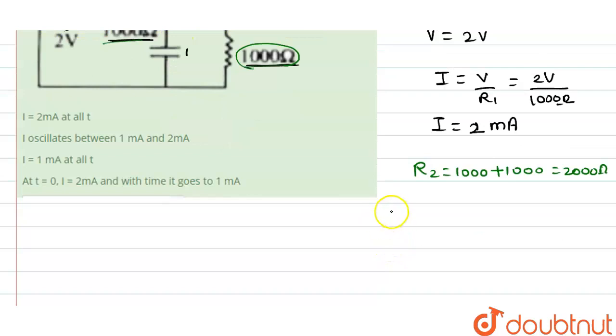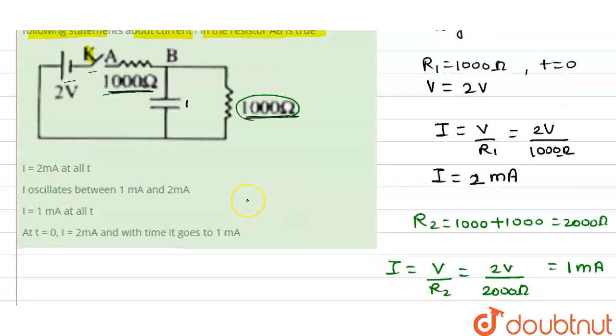And now the current flowing will be I equals V divided by R2, it is 2 volts divided by 2000 ohm, so we can say that it is 1 milliampere.